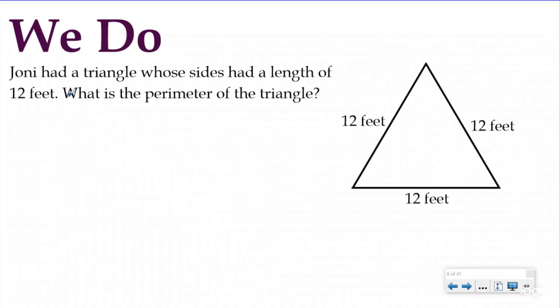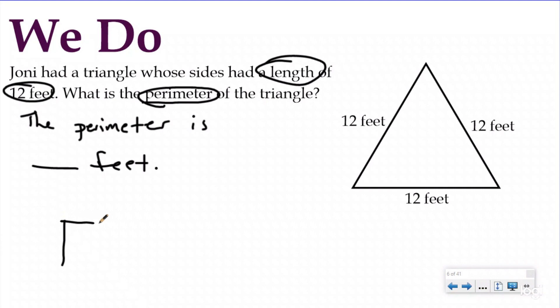Our we do problem says Joni had a triangle whose sides had a length of 12 feet. What is the perimeter of the triangle? So my statement is going to say the perimeter of the triangle is blank. Again, I know I'm looking for perimeter. So I need to know my feet right there. And also I have the picture right here. So again, it doesn't matter what the shape is. If I'm finding perimeter, I'm going around the edges of the shape. So I know now I'm going to solve this again using my visual model, because this is really going to help me next lesson. I have three equal groups. I want to split this into three equal groups. And each side was 12. And I'm looking for the total length of all the sides. So I'm going to add up my 12, my 12 and my 12. And when I do 12 plus 12 plus 12, I see that my total perimeter is 36 feet.